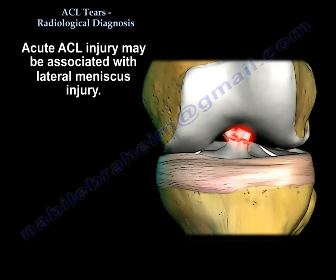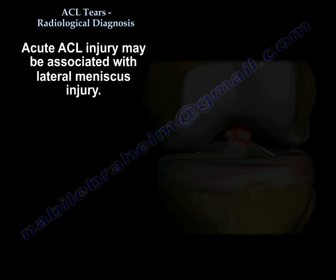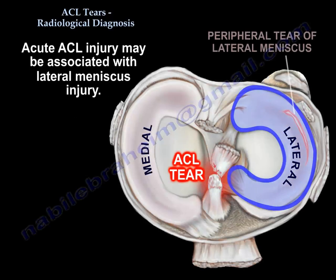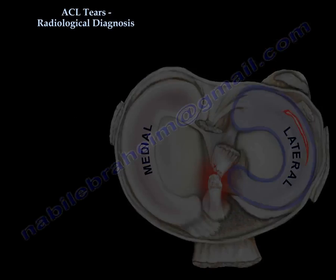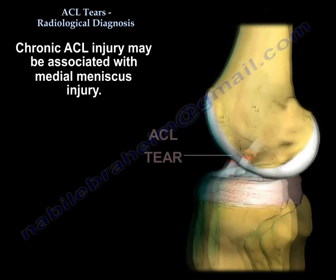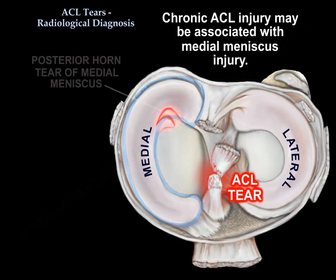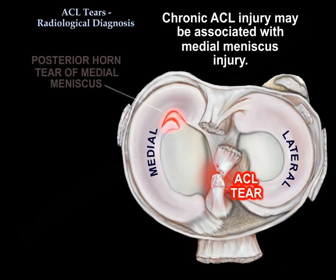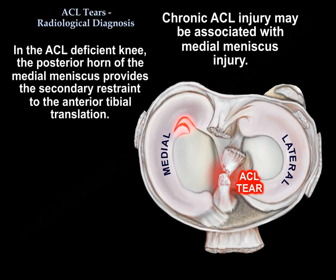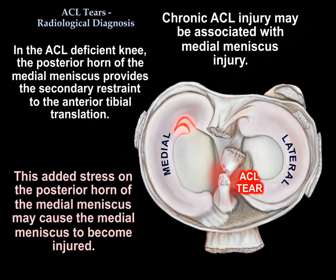Acute ACL injury may be associated with lateral meniscus injury, while chronic ACL injury may be associated with medial meniscus injury. In the ACL-deficient knee, the posterior horn of the medial meniscus provides the secondary restraint to anterior tibial translation. This added stress on the posterior horn of the medial meniscus may cause it to be injured over time.